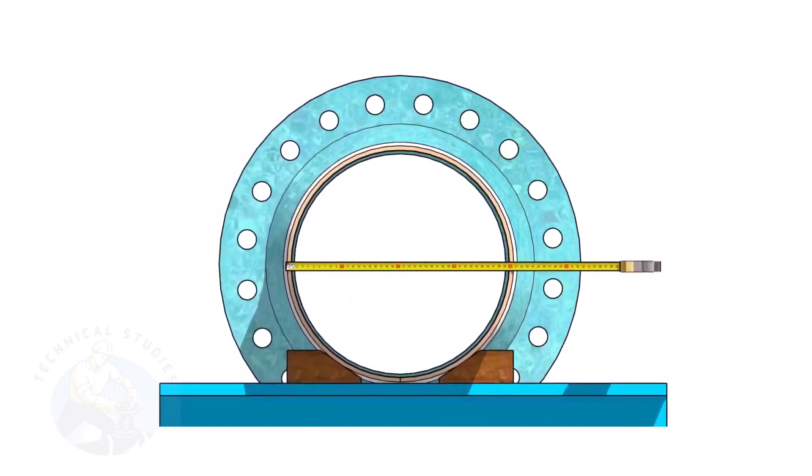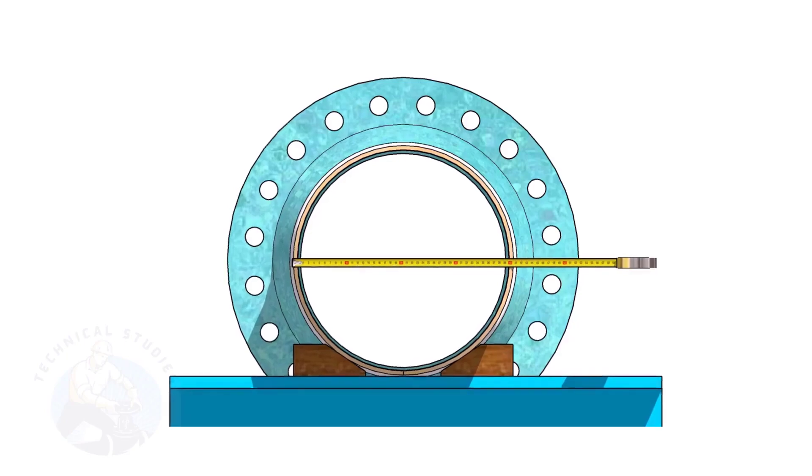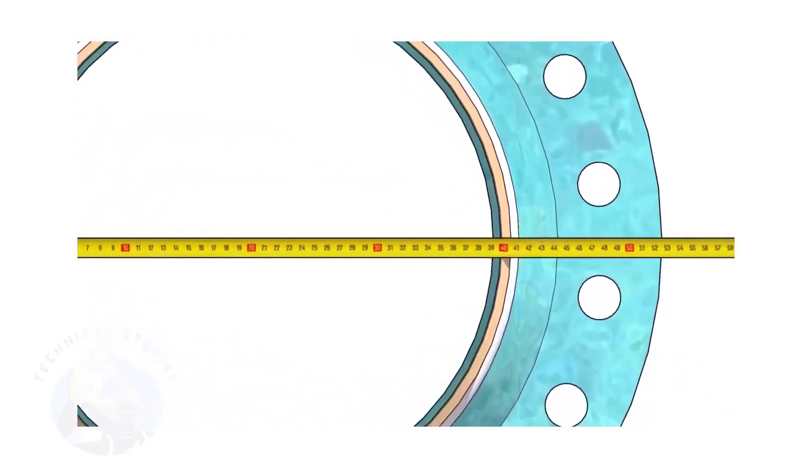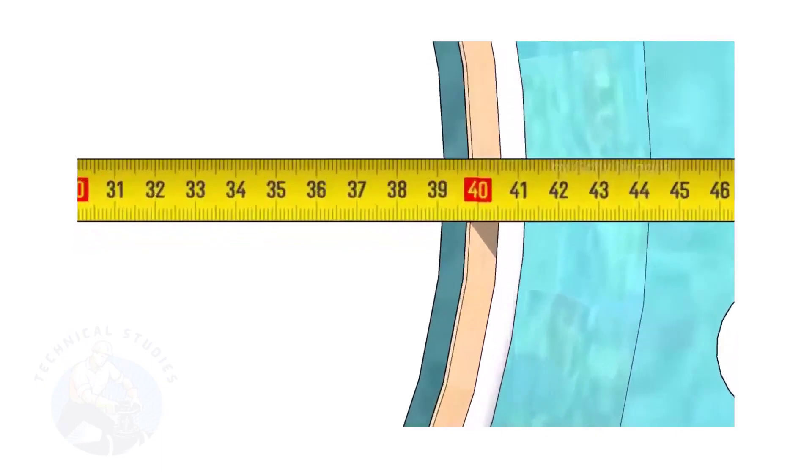Check the outer diameter of the pipe. Here, the diameter of the pipe is 406 millimeters.